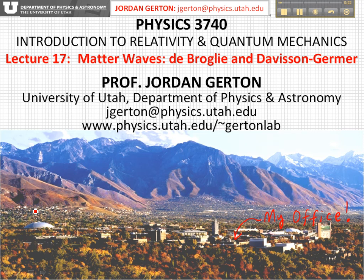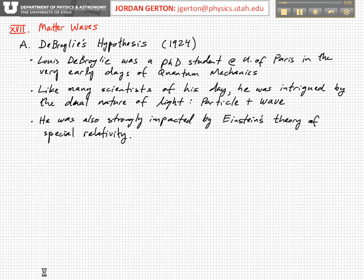In the last lecture we talked about a double-slit experiment, which in principle we showed can be used to distinguish between wave-like and particle-like behavior for quantum particles, such as photons and even electrons. But in fact, that double-slit experiment is actually very difficult to achieve for electrons, and it was not done until a decade or two ago.